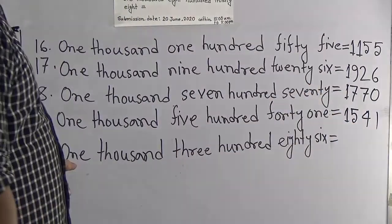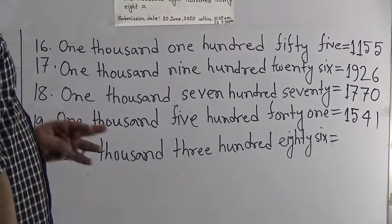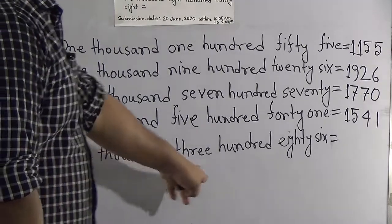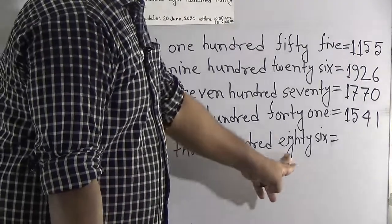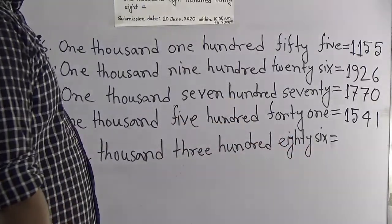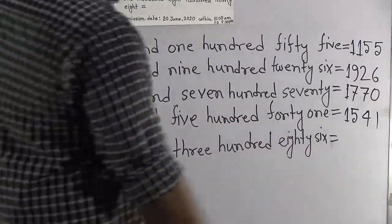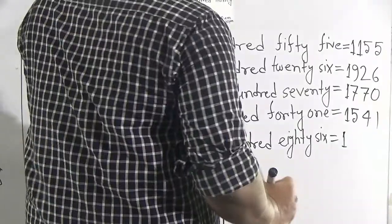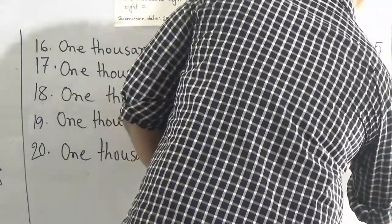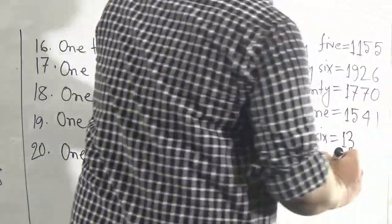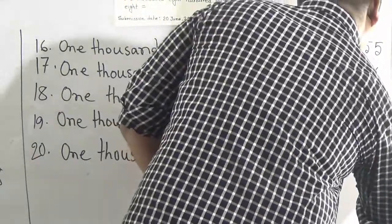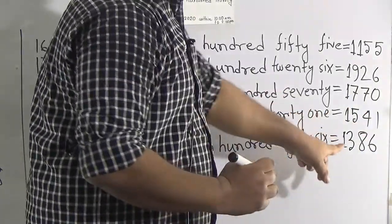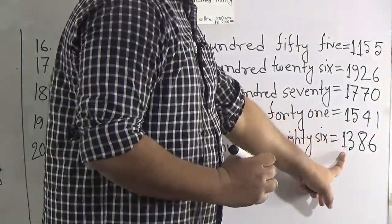Our next — and last — number is 1,386. 1,000 means 1, 300 means 3, and 86 means 8 and 6. So it is called 1,386.